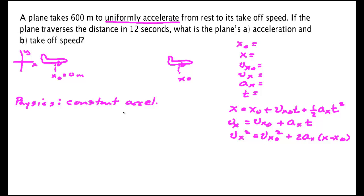In this video we're going to solve another constant acceleration problem. A plane takes 600 meters to uniformly accelerate from rest. The keyword uniformly means constant. Constant acceleration tells me that this problem is one where the kinematic equations are true.